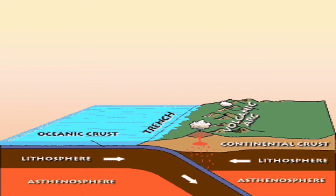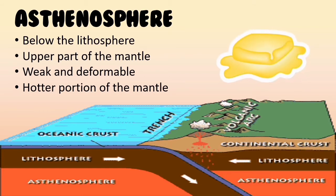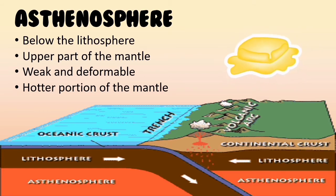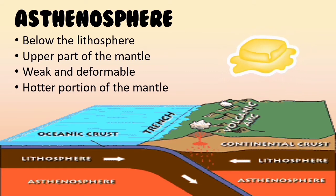These tectonic plates float above the asthenosphere. The asthenosphere is the upper and hotter part of the mantle, found below the lithosphere. It is deformable due to the heat and pressure in the mantle. It can be compared to butter — it is semi-solid, and when heat is applied, it melts.